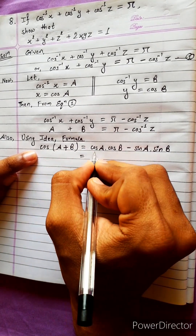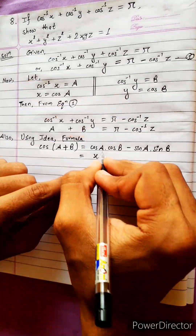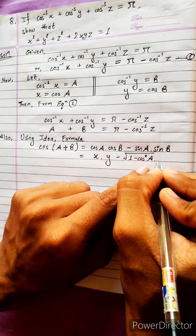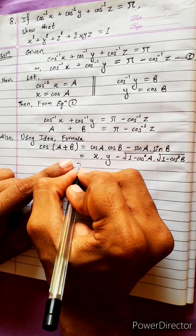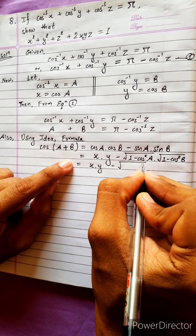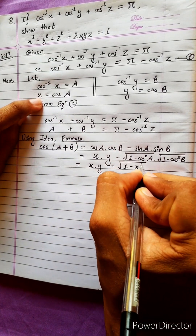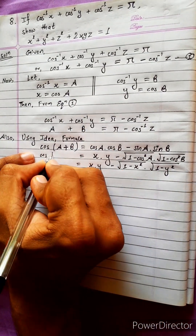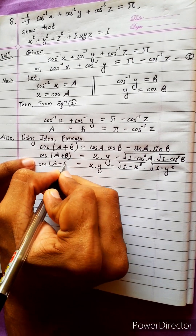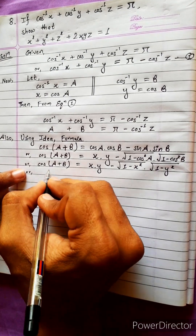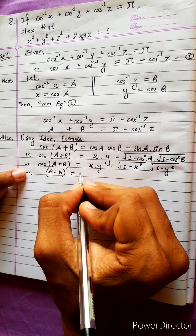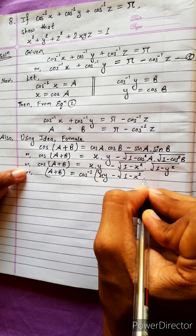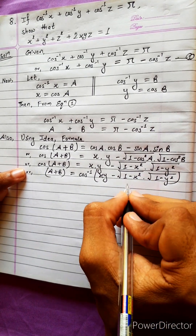So cos(A + B) equals cos A · cos B minus sin A · sin B, which equals x·y minus √(1 − cos²A) · √(1 − cos²B), giving us x·y minus √(1 − x²)·√(1 − y²). This is equation 2.